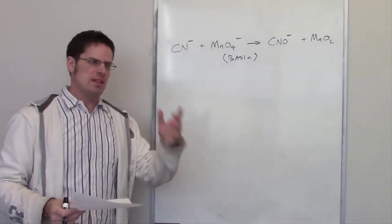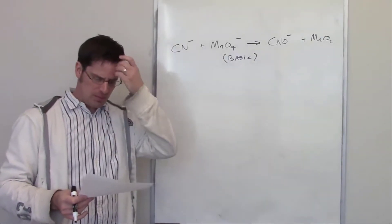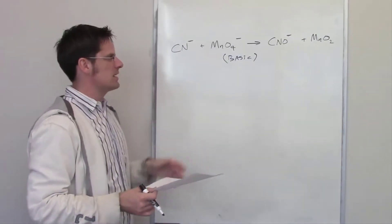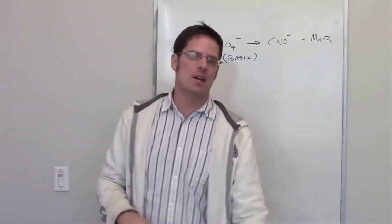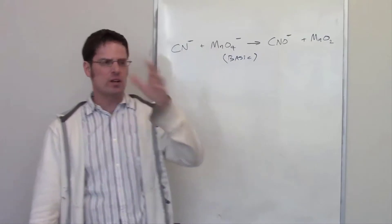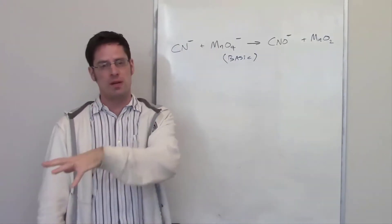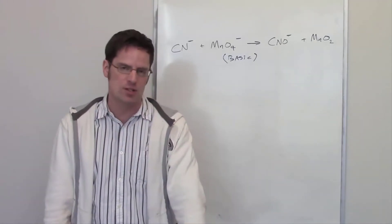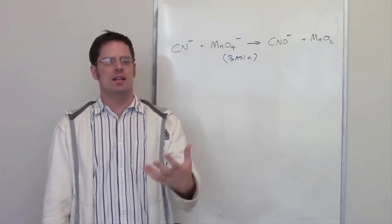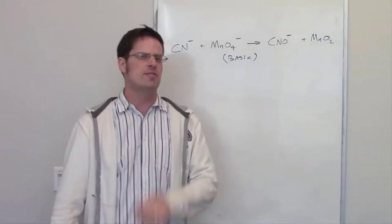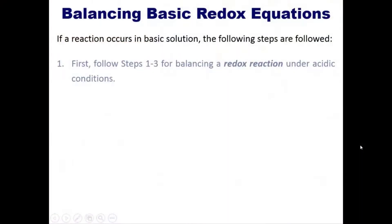This question asks us, like the previous one, to complete and balance this redox reaction under basic conditions. How do we do that? Well, there are two separate ways: one is under acidic conditions, as shown in the previous example, and the other is under basic conditions. Let's go back to our lecture slides. The first step says to follow steps one through three for balancing a redox reaction under acidic conditions.